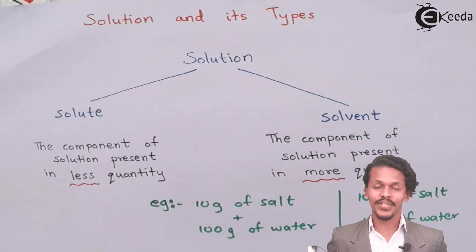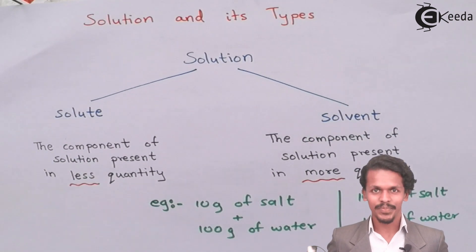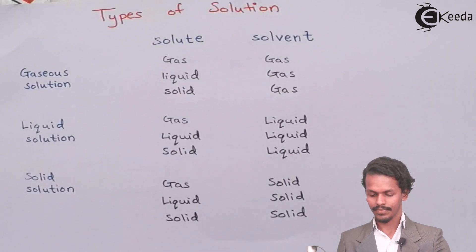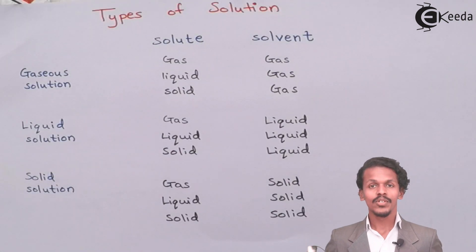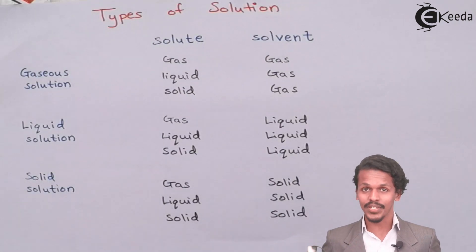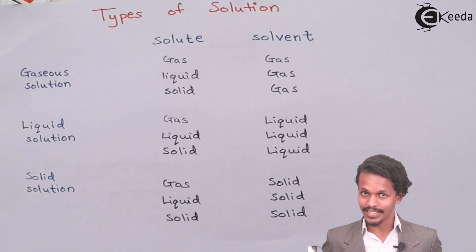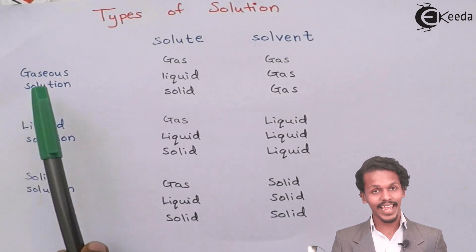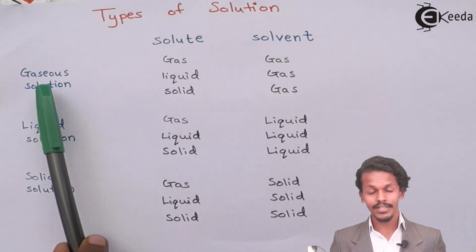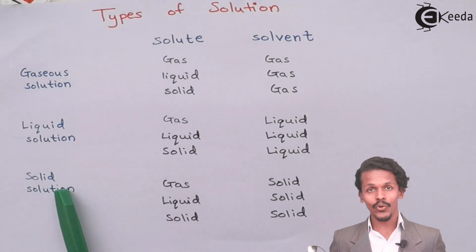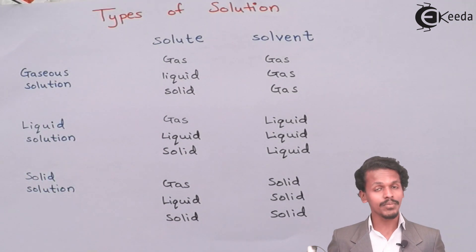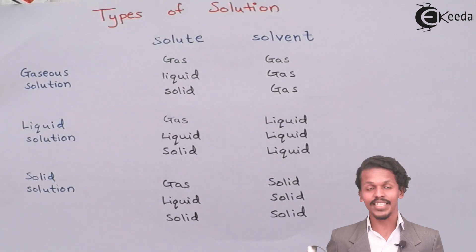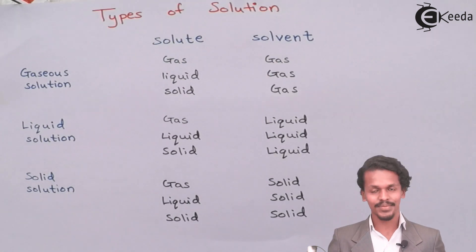Now let's look at the types of solution. There are three main types: gas solution, liquid solution, and solid solution. As we know, there are only three states of matter — solid, liquid, and gas — so solutions are distributed into these three parts accordingly.